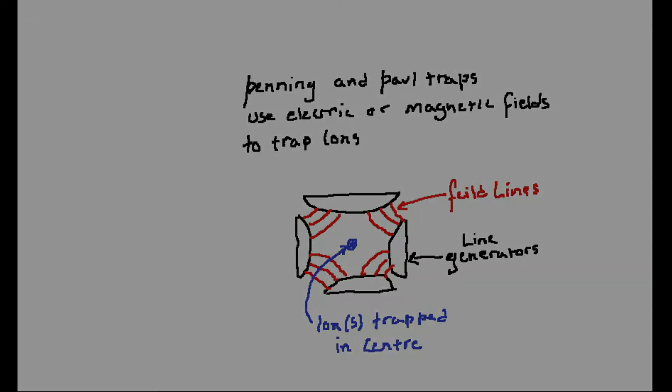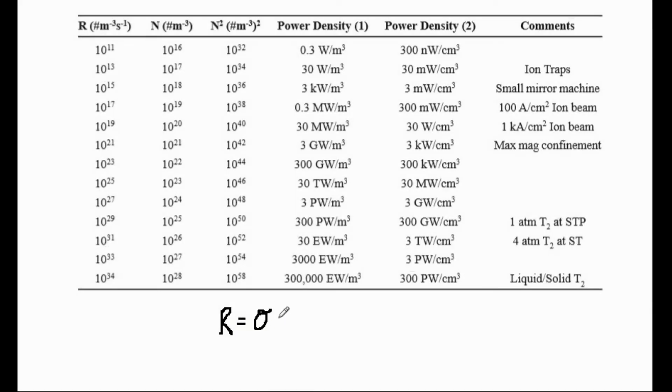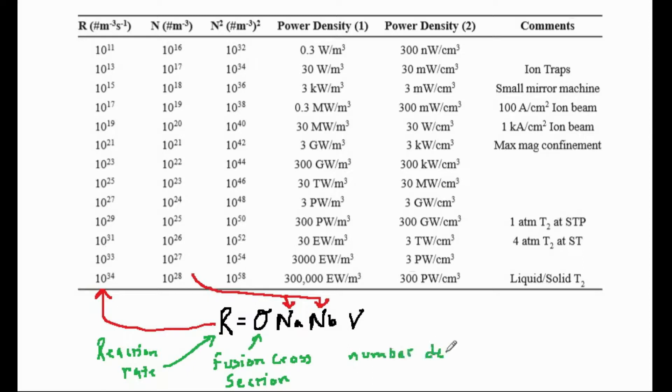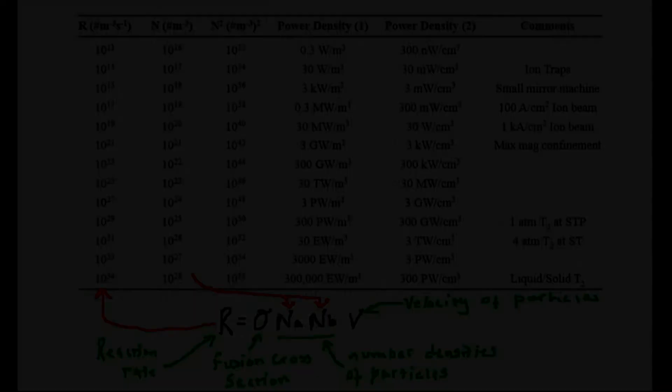Since the reaction rate is equal to sigma NaNB times V, this only corresponds to power densities of a few tens of watts per cubic meter for a deuterium-tritium reaction. Unfortunately, the metal grid ion traps that are actually used in most fuser designs have a much lower ion density than the Paul or Penning types and so the situation is even worse.